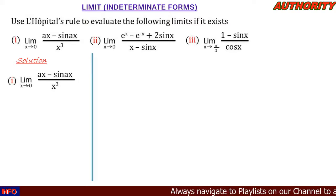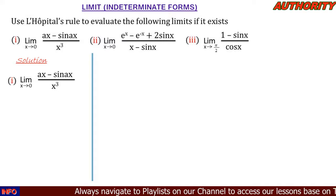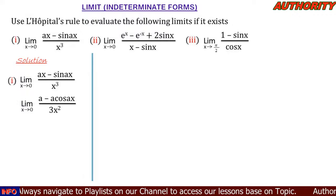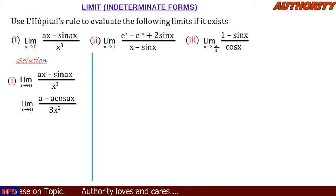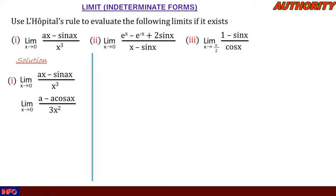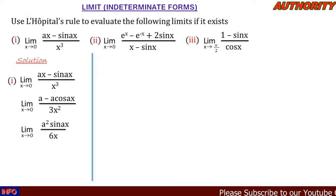Let's go. For number one, lim as x approaches zero of (ax - sin(ax)) / x³. Let's differentiate the numerator — we're going to have a - a·cos(ax). The denominator gives us 3x². Plugging in zero gives us 0/0, so we differentiate again. We get lim as x approaches zero of a²·sin(ax) / 6x.